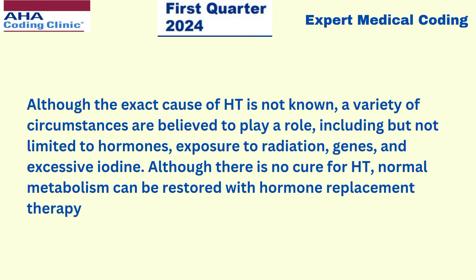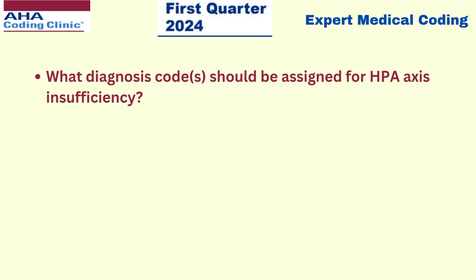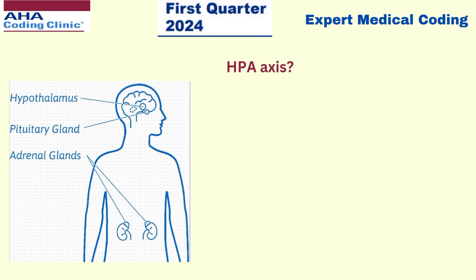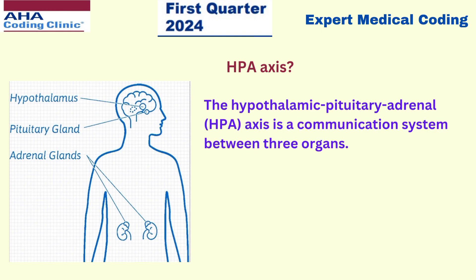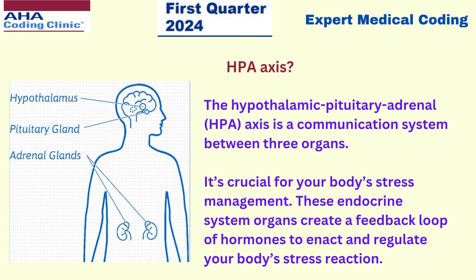Now let's move to the next coding clinic: what diagnosis code should be assigned for HPA axis insufficiency? Let us first see what the HPA axis is. The hypothalamic-pituitary-adrenal axis is a communication system between three organs: the hypothalamus, pituitary gland, and adrenal glands. It is crucial for your body's stress management, as these endocrine system organs create a feedback loop of hormones to enact and regulate your body's stress reaction.